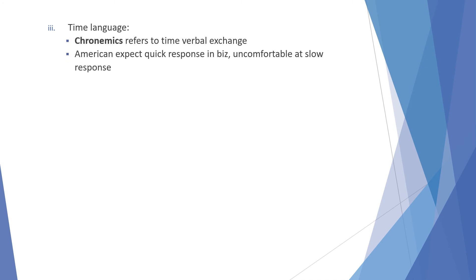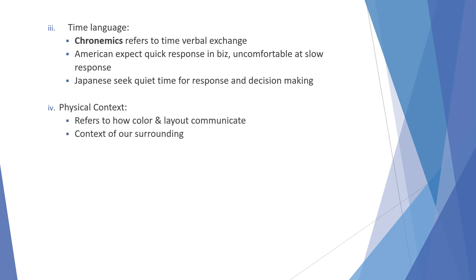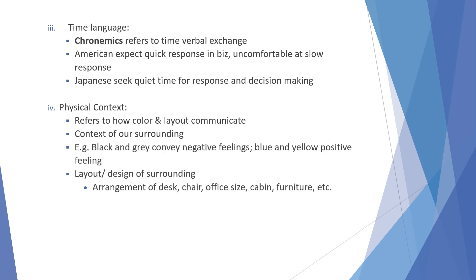Next is time language — chronemics — which refers to the timing of verbal exchange. Americans expect quick responses in business and are uncomfortable with slow responses, whereas Japanese seek quiet time for response and decision making. Next is physical context, which refers to how color and layout can communicate in the context of our environment. For example, black and gray convey negative feelings, while blue and yellow convey positive feelings.